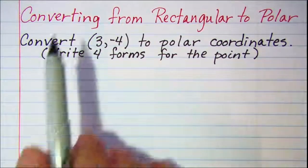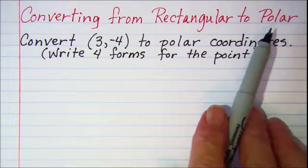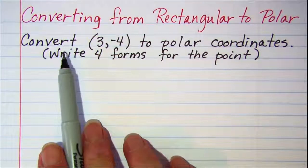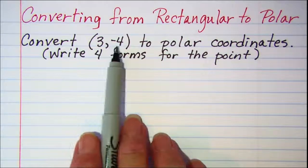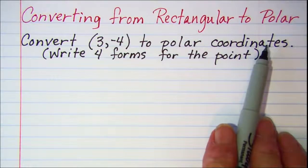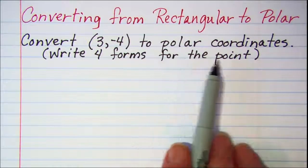In this video, we'll be converting from rectangular coordinates to polar coordinates. Our first problem is to convert the point (3, -4) from rectangular coordinates to polar coordinates, then write four forms for your answer.